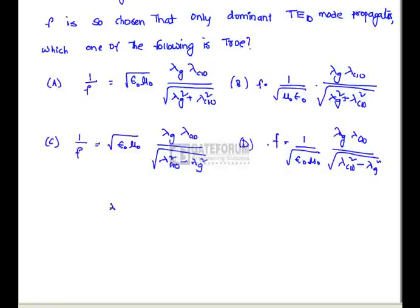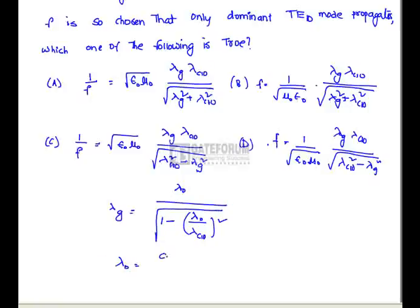We know that the guide wavelength λg equals the free space wavelength λ0 divided by the square root of 1 minus (λ0 / λc10)². Here, λ0 equals c divided by f, where c is the velocity of light.